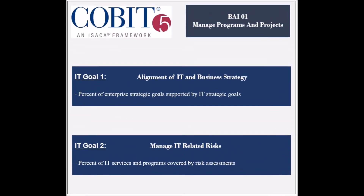The process supports the achievement of four IT-related goals. The first supported goal is to ensure the alignment of IT and business strategy. Its achievement is measured by the percent of enterprise strategic goals supported by IT strategic goals, and by the stakeholder satisfaction level with the planned IT programs.